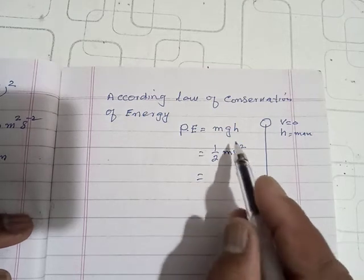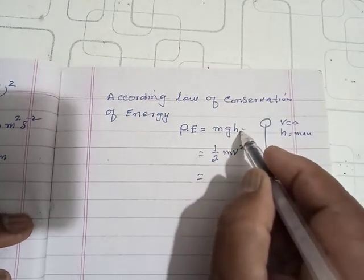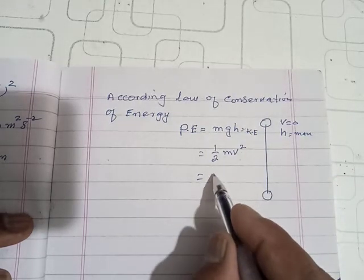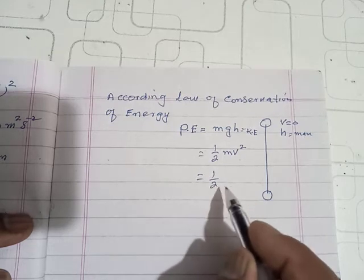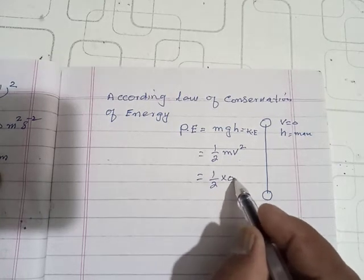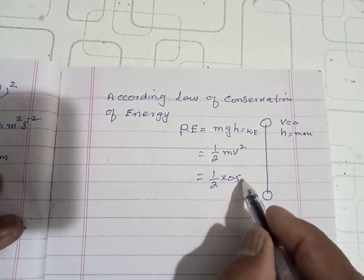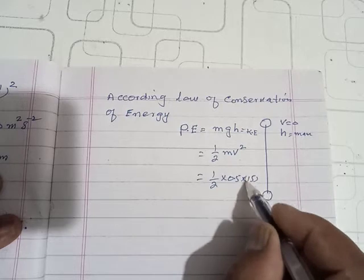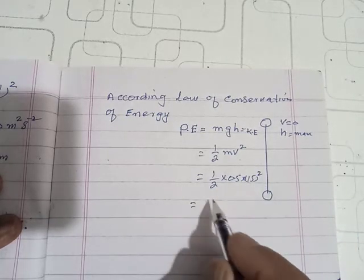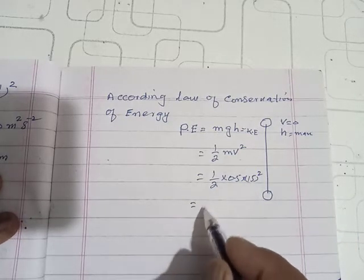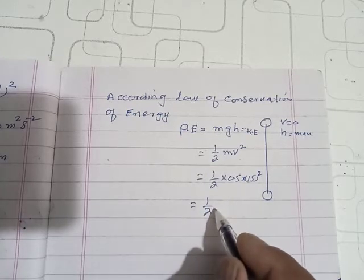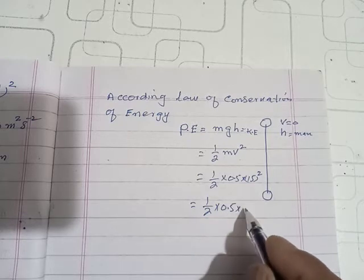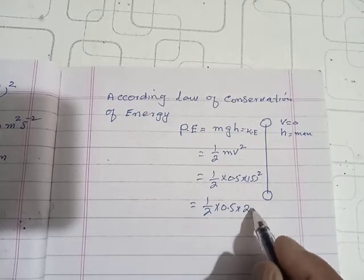PE is equal to initial KE, which equals half MV square. Here we put the values: 1/2 × 0.5 × 15 squared. So our potential energy is 1/2 × 0.5 × 225.